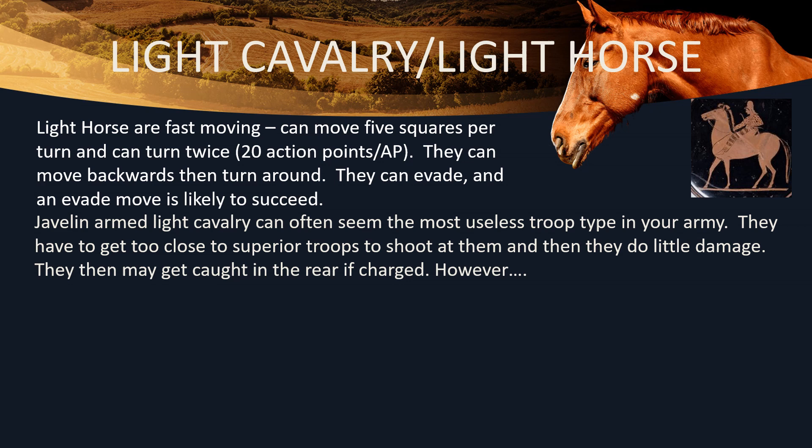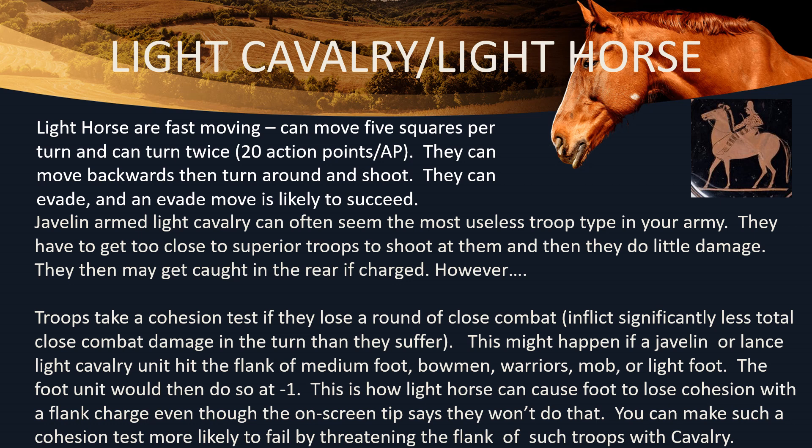Javelin-armed light cavalry may seem to be a rather useless troop type because they have to get so close to superior troops to shoot at them, they can't fight them, and they do little damage. They may even get caught in the rear if they charged. Troops take cohesion tests if they lose a round of close combat, and this might happen if a javelin or lance light cavalry unit hits the flank of medium foot, bowmen, warriors, mob or light foot — in that case the unit testing would do so at minus one. So javelin-armed light cavalry are really good at darting in and hitting mob, bowmen or these troop types that have been damaged, causing them to lose a cohesion level and become disrupted.